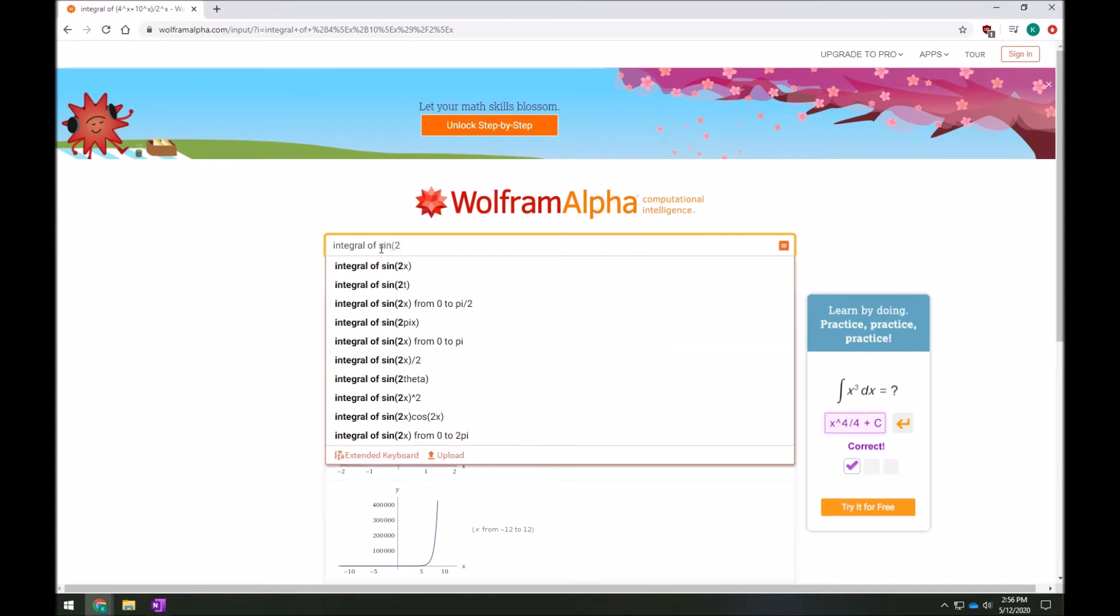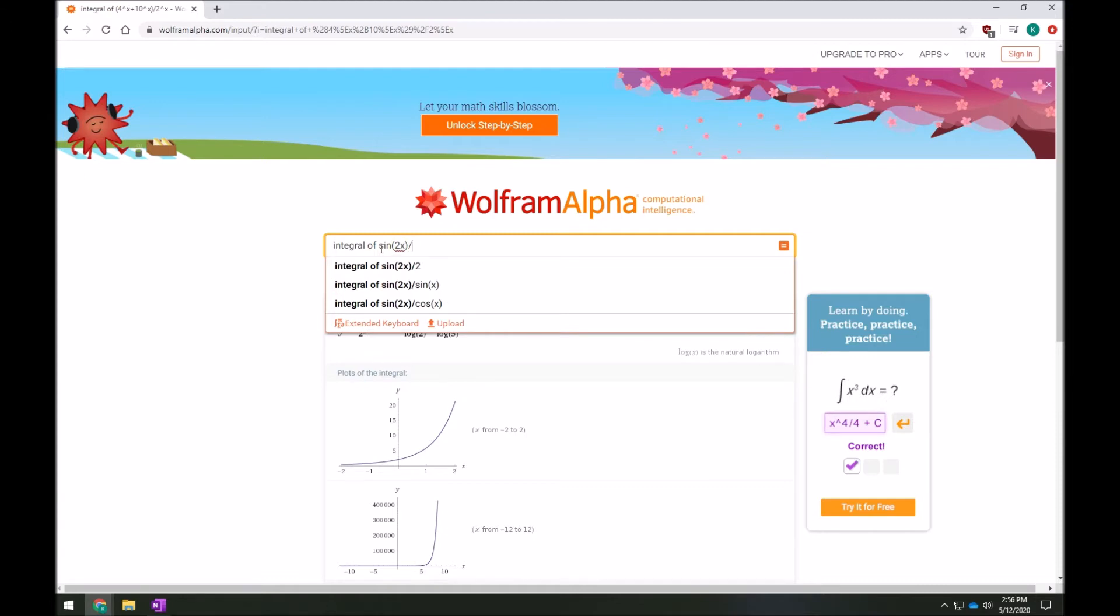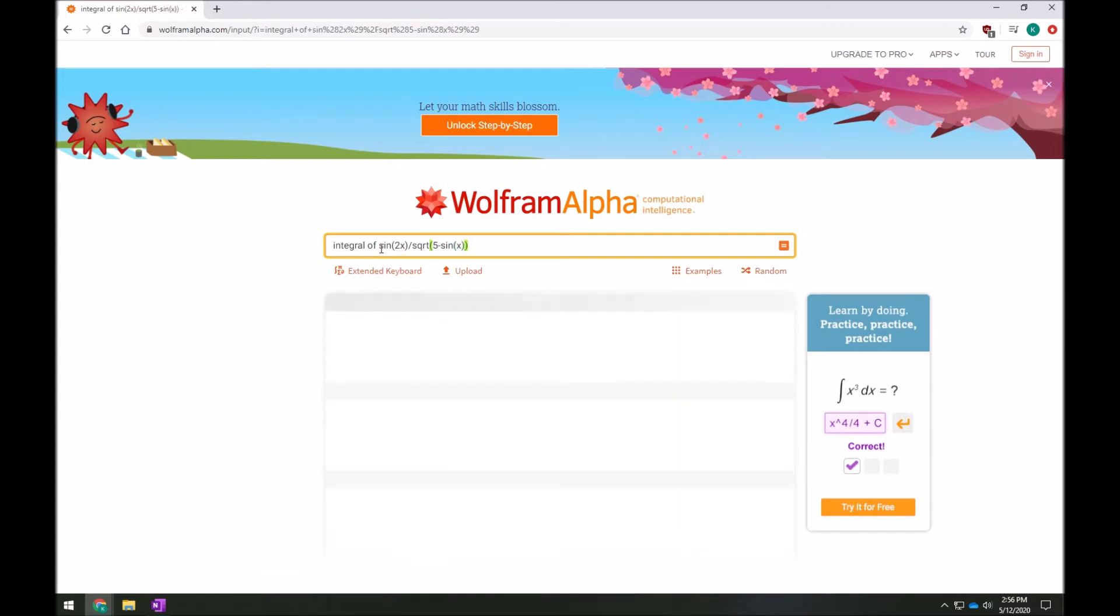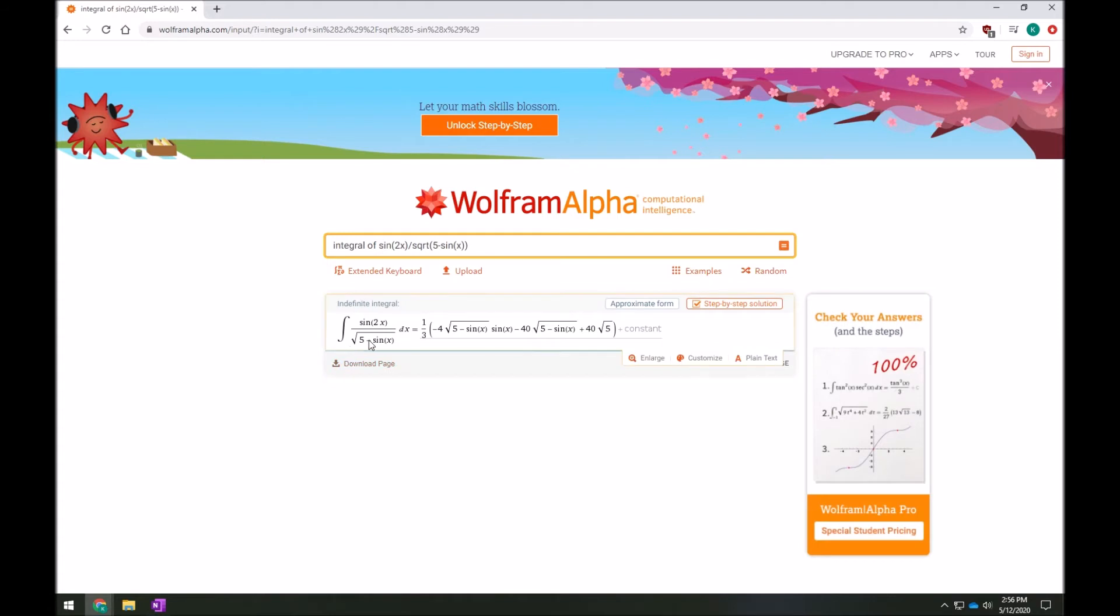So I want sine of 2, I don't want to type in the word theta, let's just use x. That's fine. To get a square root in I'll do SQRT. That sounds pretty good. Then I'll do 5 minus the sine of x. Close all this off and let's see if Wolfram interpreted what I meant. Yep, there it is. Perfect.